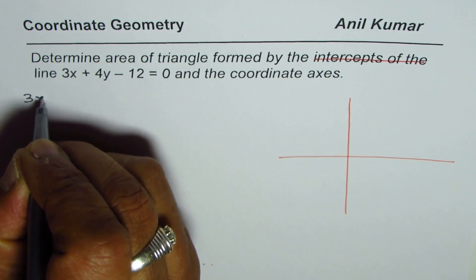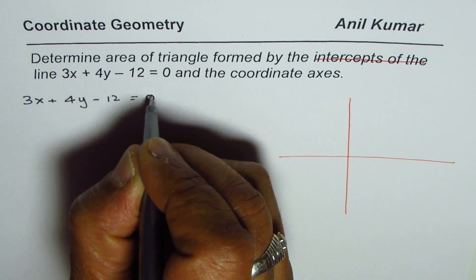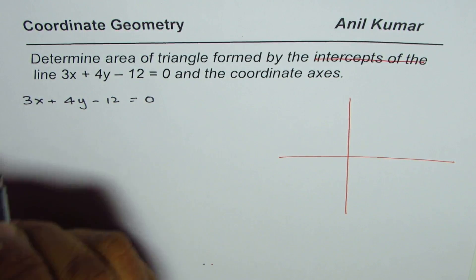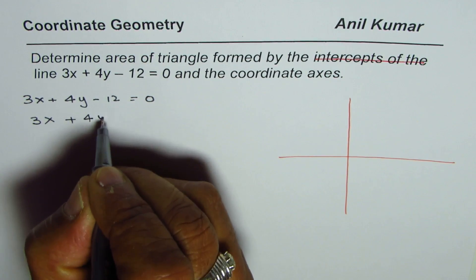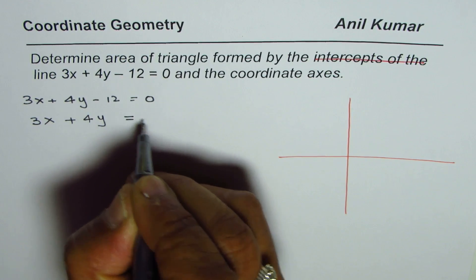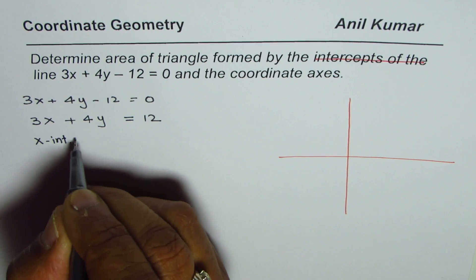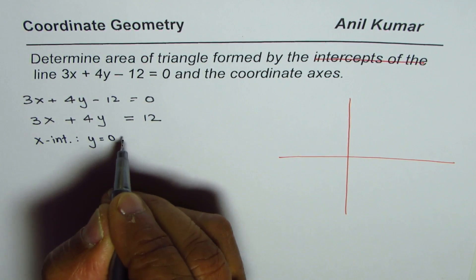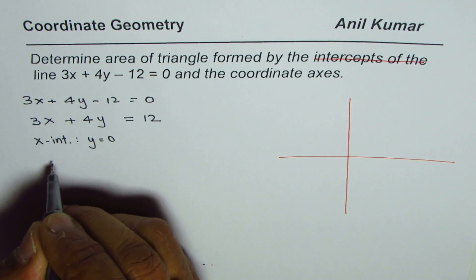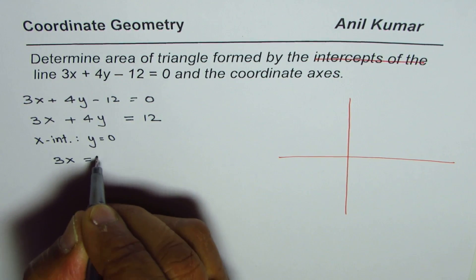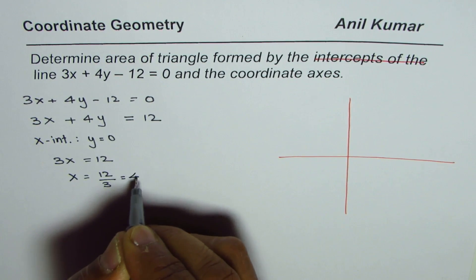So we have the line 3x plus 4y minus 12 equals to 0. We can find x and y intercept. Let me first rearrange. So we'll write this as 3x plus 4y equals to 12 and for x intercept y equals to 0. When I put y equals to 0 I get 3x equals to 12 or x equals to 12 divided by 3 which is 4.